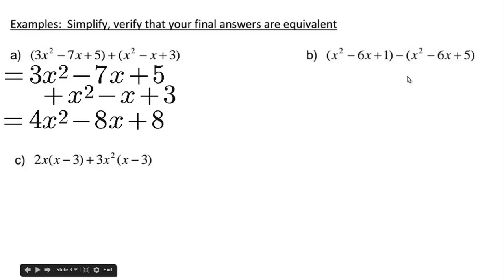For the second one, we can drop the brackets on the first part. When we drop the brackets on the second part, we have to expand that negative sign in. So we get -x² + 6x - 5. By lining them up like this, you can see x² - x² cancel out, -6x + 6x cancel out, and 1 - 5 is negative 4.